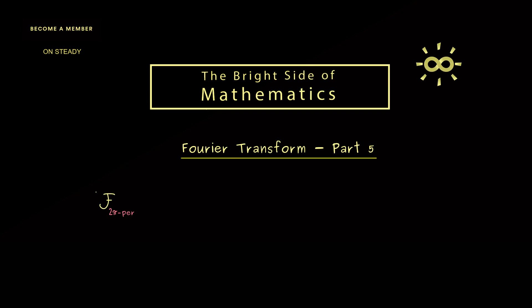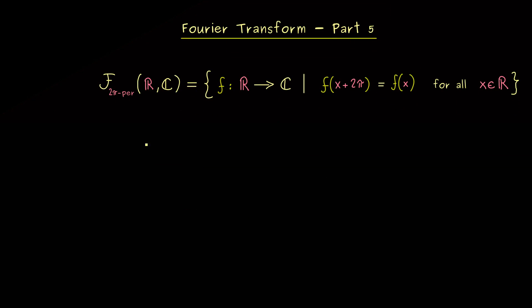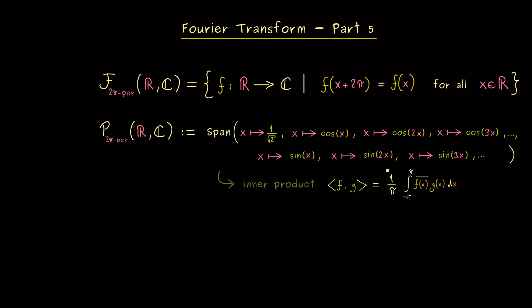Let's immediately start by recalling our set of functions that are 2π periodic. They should be defined on the real number line, but the output can be a complex number. More precisely, this means we consider functions f from ℝ to ℂ with the property that I will not change the output if we shift the input by 2π. These functions are the ones we want to approximate with cosine and sine functions or more concretely with the trigonometric polynomials. These we can denote with P and they form a subspace in the space F. This subspace is given by the span of these functions, and we also allow for complex scalars.